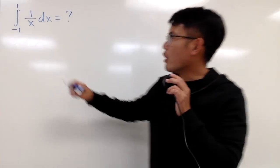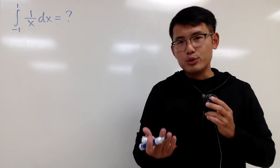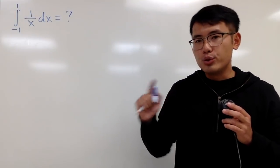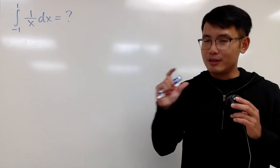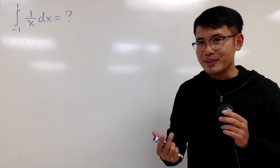A while ago I made a video on the improper integral from negative 1 to 1 of 1 over x dx. In that video, I told you guys it was a debate between two answers: 0 or divergent. In this video, I just want to say a few more things about it.